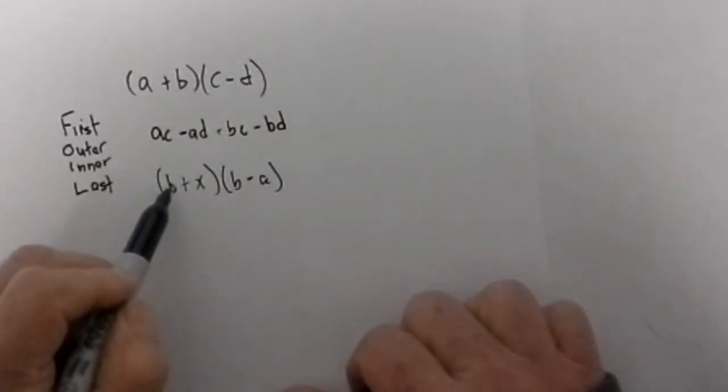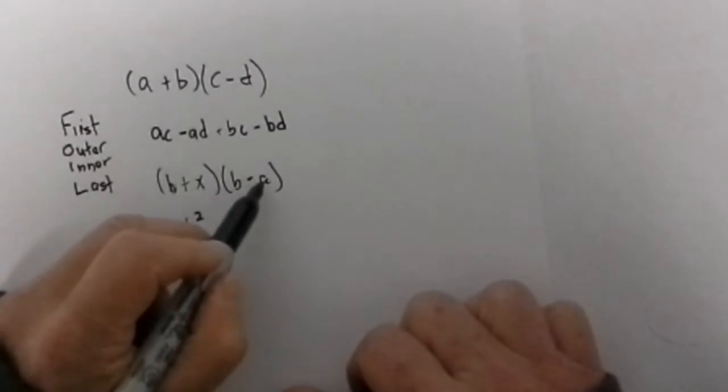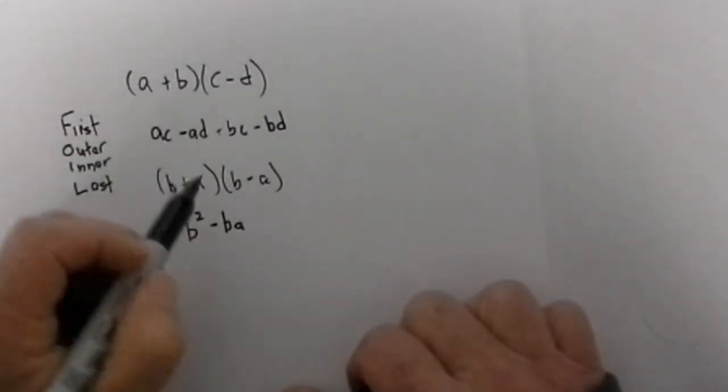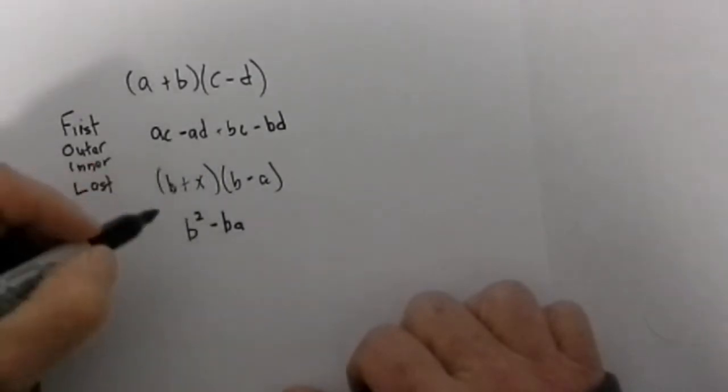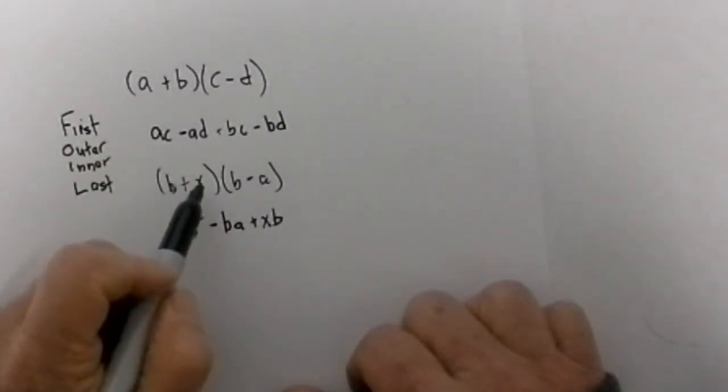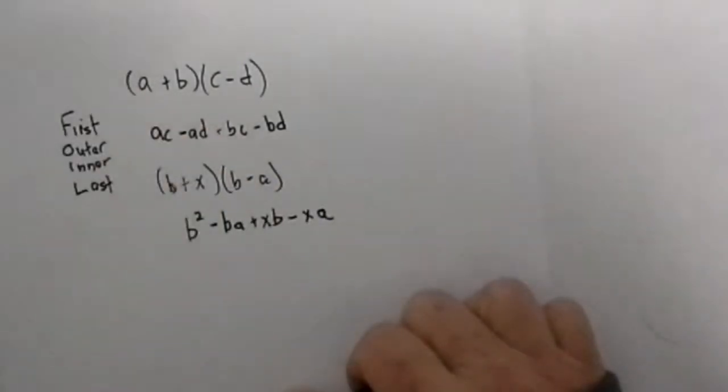So again we will do first, b times b is b squared. Outer, b times negative a is negative ba. Inner, x times b will be plus xb. And finally last, x times negative a is negative xa.